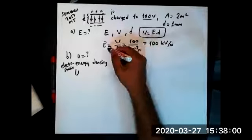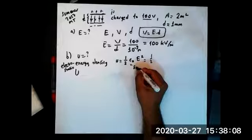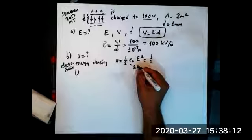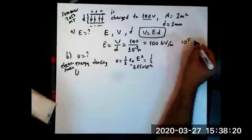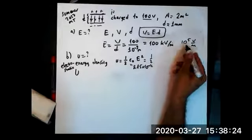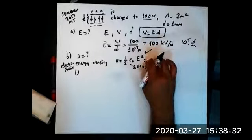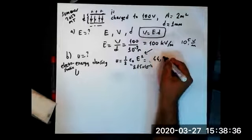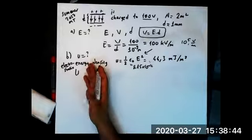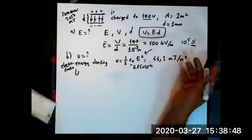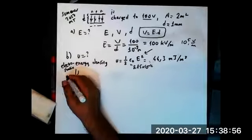Since we already have found what E is, and epsilon zero is just our physical constant which is 8.85 times 10 to minus 12, and E is just 10 to 5 volt per meter, 100 kilovolt per meter is just 10 to 5 volt per meter. You get, I'm just writing the net result, 44.3 millijoules per meter cube. By what we mean energy density is energy per volume. The energy is joules and the volume is meter cubed.